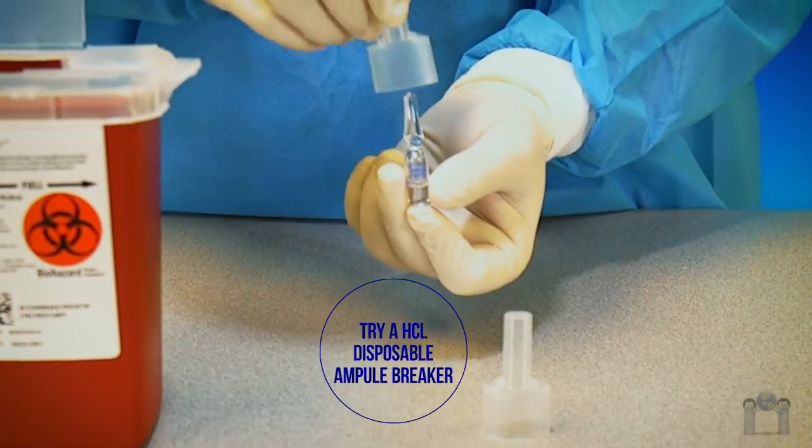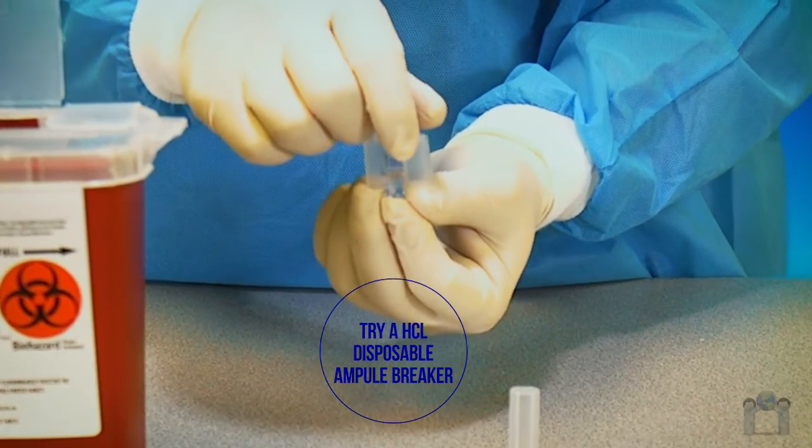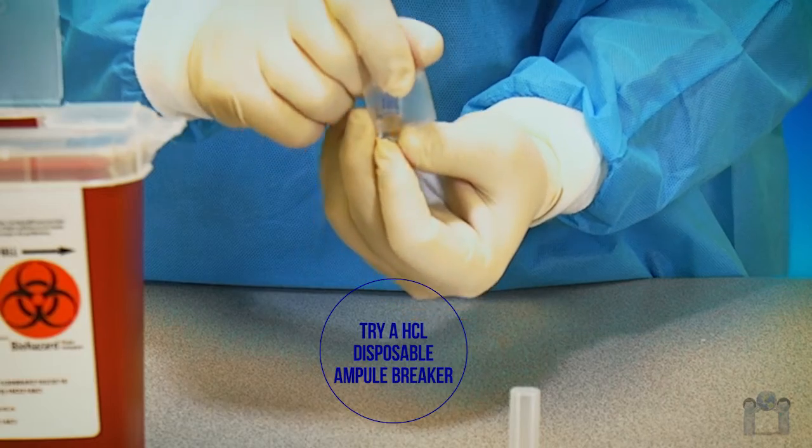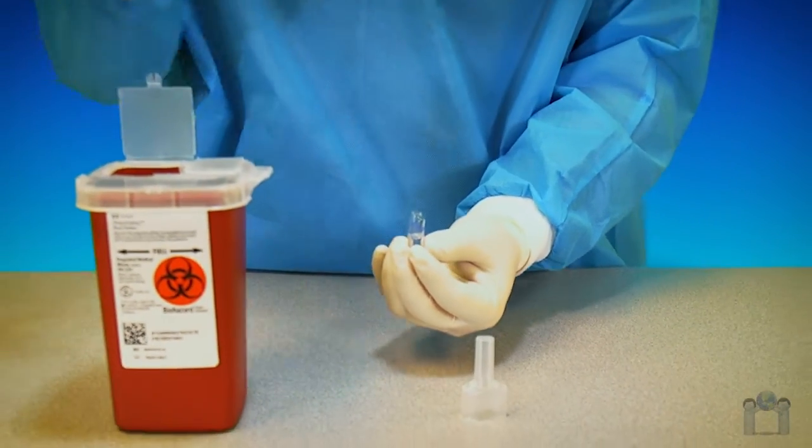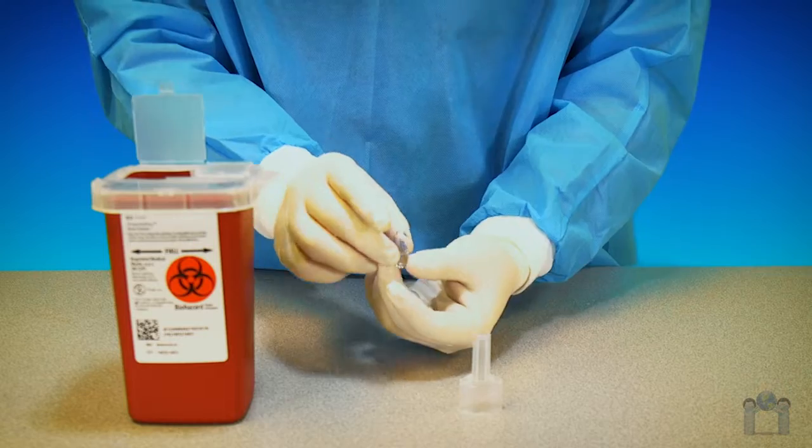Disposable ampule breakers fit over the head of the container and safely snap at the neck to reduce the risk of finger cuts during med prep. Then, both pieces can be discarded together into a sharps container.